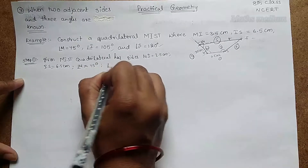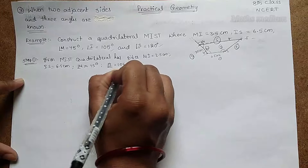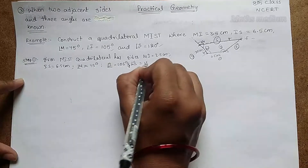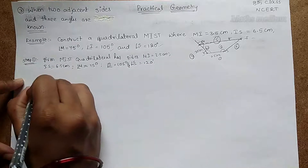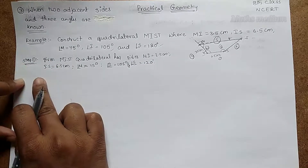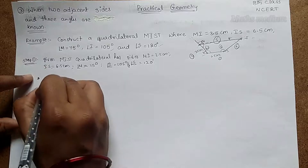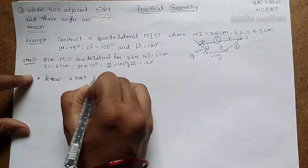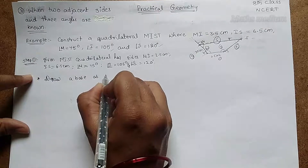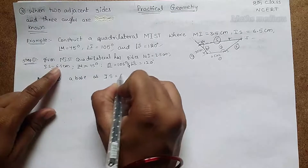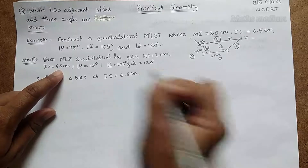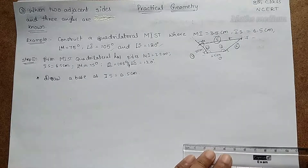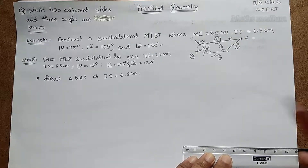Angle I is equal to 105 degrees and angle S is equal to 120 degrees. Now Step 1: draw base IS equal to 6.5 centimeters. Make a line of 6.5 centimeters.